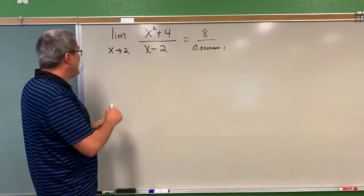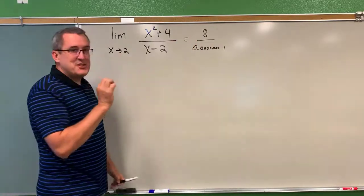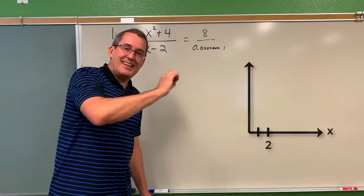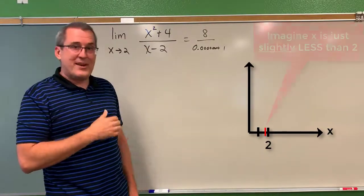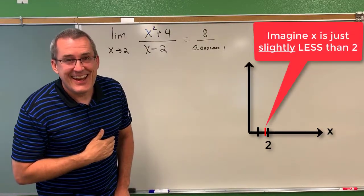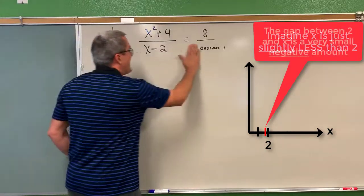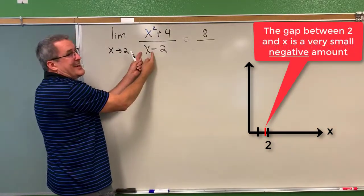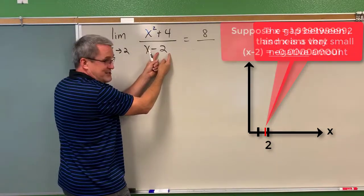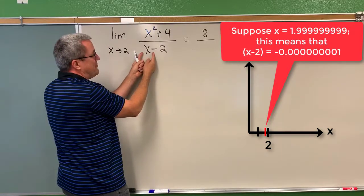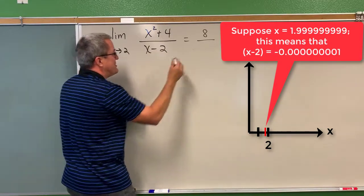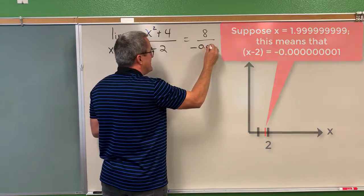Now on the other hand, what if x was nearby to 2 but just slightly less than 2? Like 1.999999999. Now what happens? Imagine if x is 1.999999999 and you subtract 2. Since this is a little bit less than 2, subtract 2, the result is going to be a negative 0.00000.